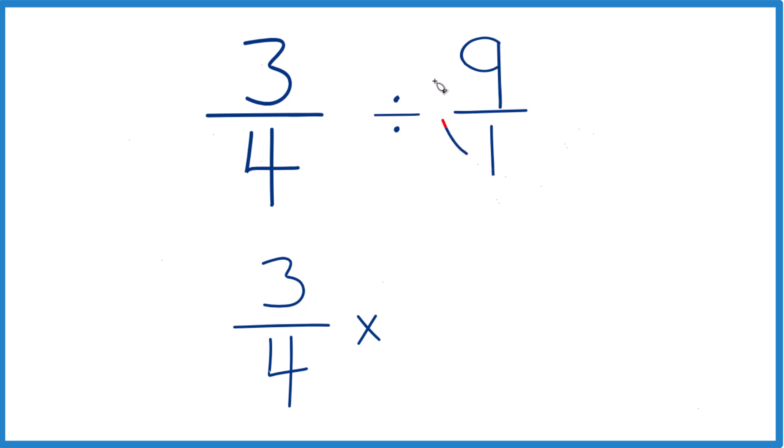we're going to multiply by the reciprocal. So denominator goes to the top, numerator goes to the bottom. So 1 over 9, or 1 ninth.